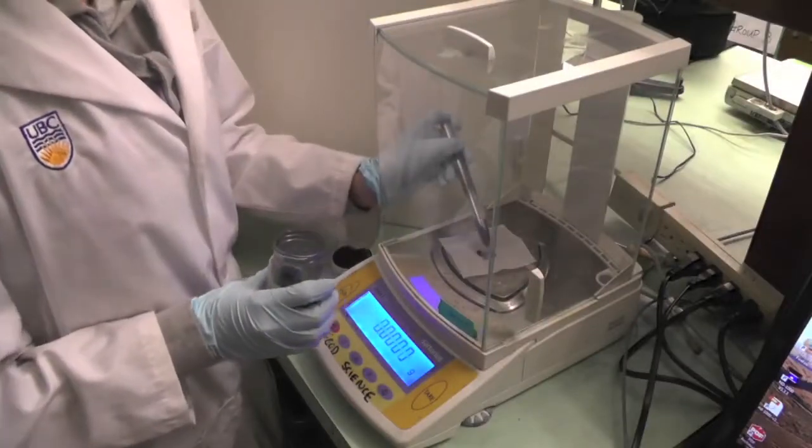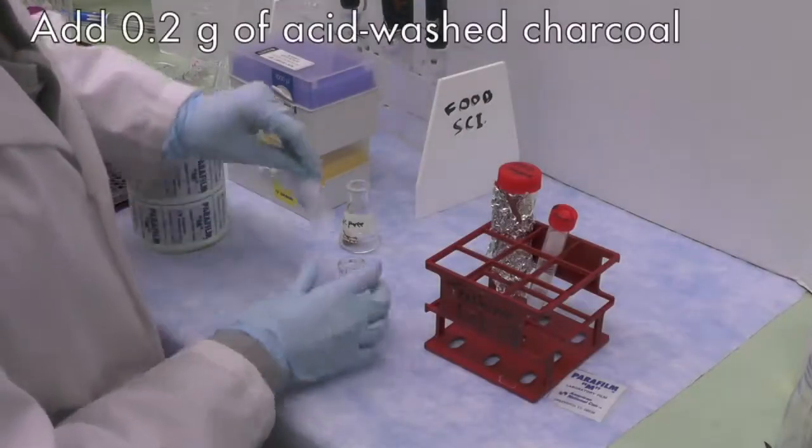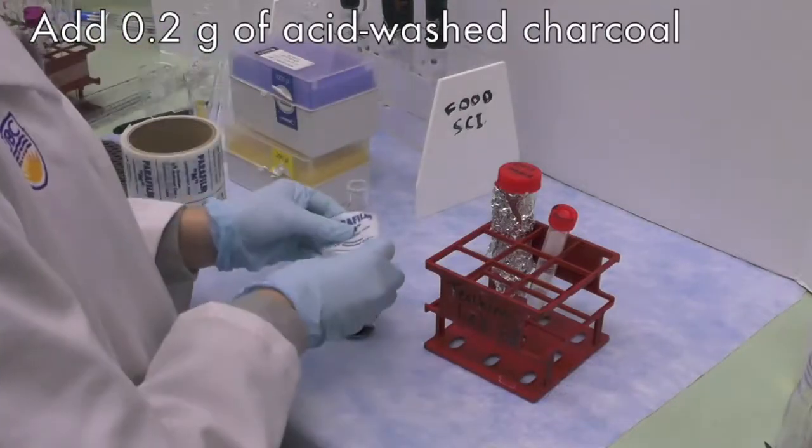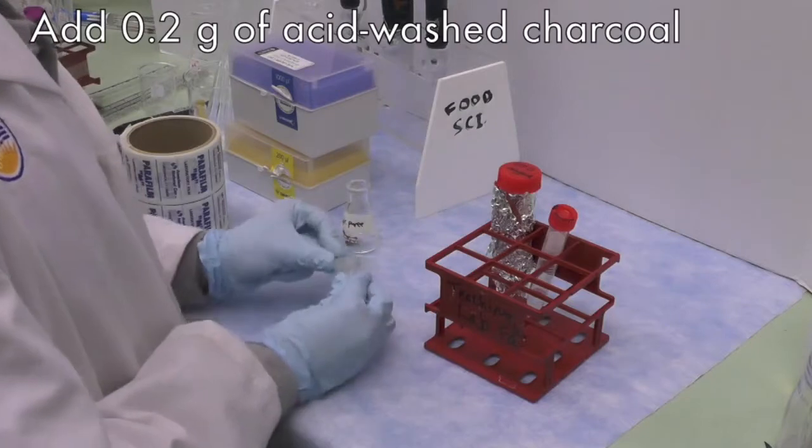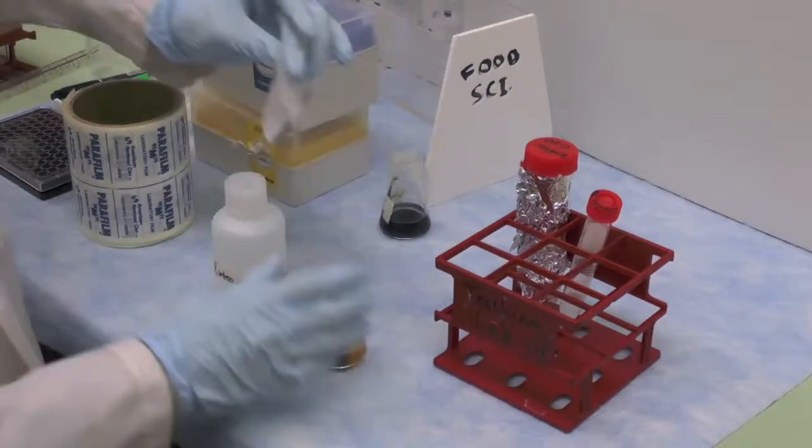Weigh 0.2 gram of acid-washed charcoal on the weighing paper and transfer to the 25 ml Erlenmeyer flask containing apple puree or ascorbic acid. Repeat the procedure for all puree samples, including D-value samples.